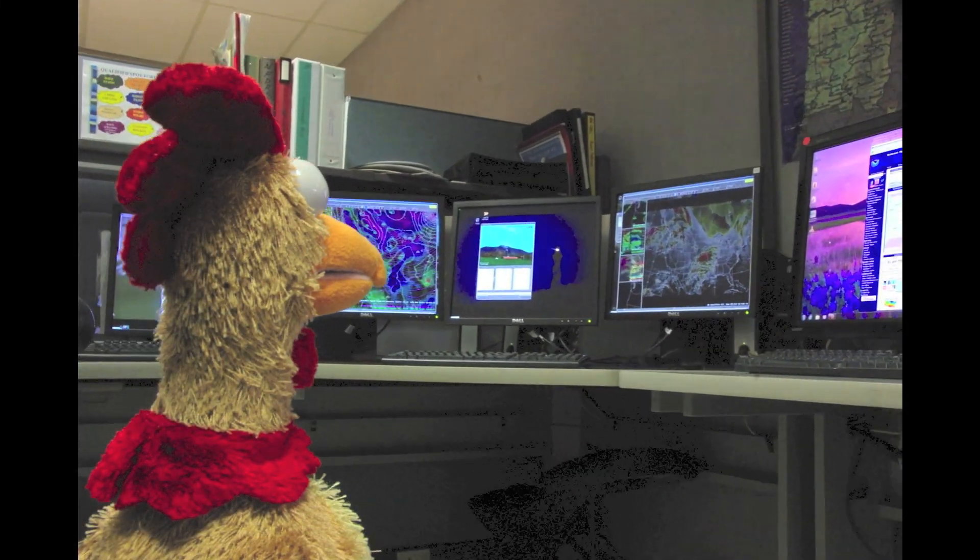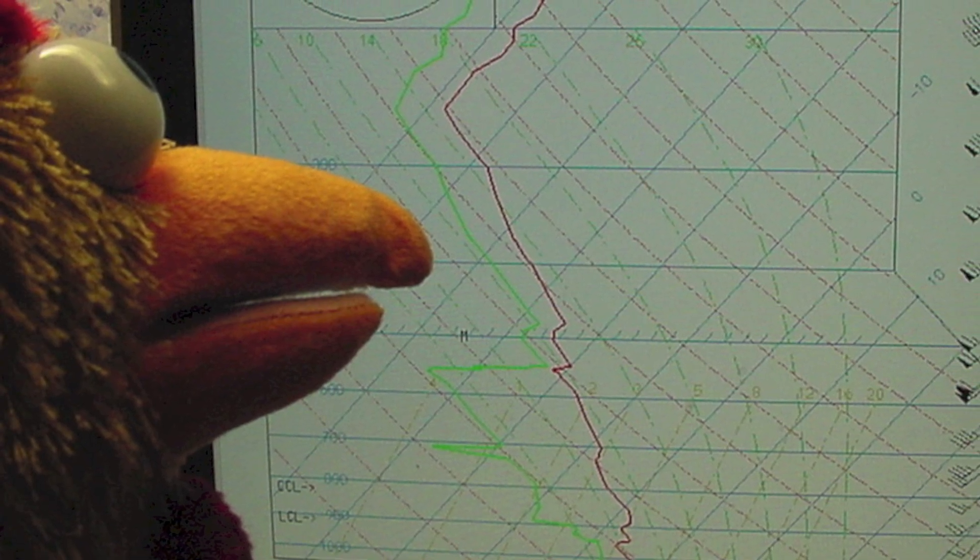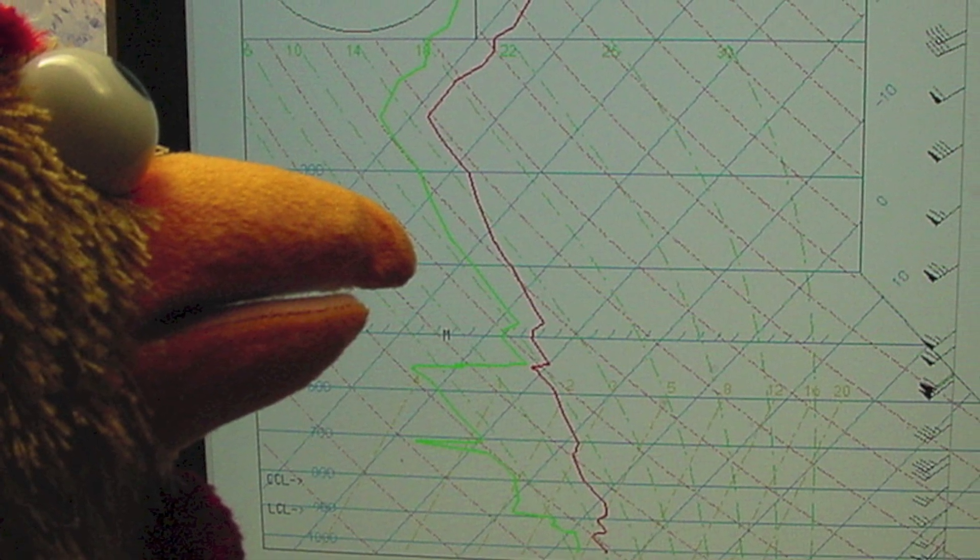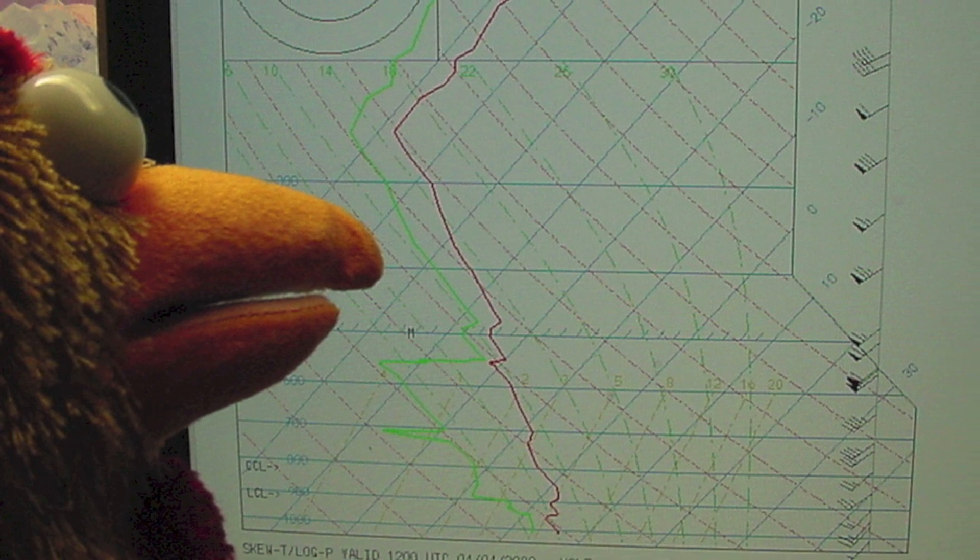Next, Larry heads over to a computer workstation, where he looks at the data collected from the balloon. It tells him how warm or cold, wet or dry, and how windy it is high above the ground.